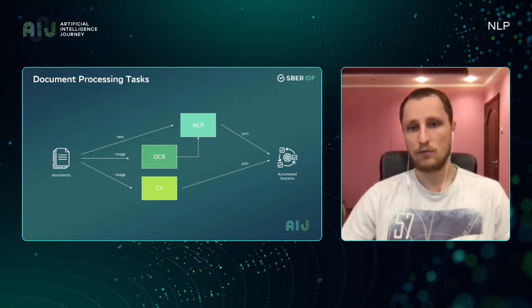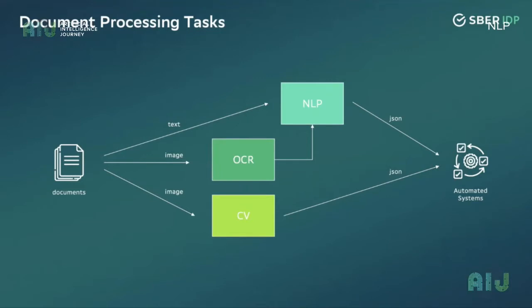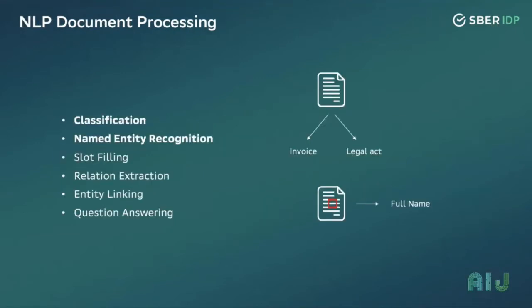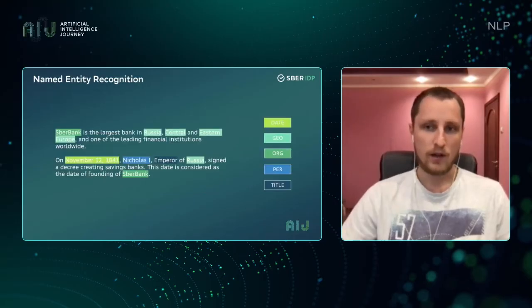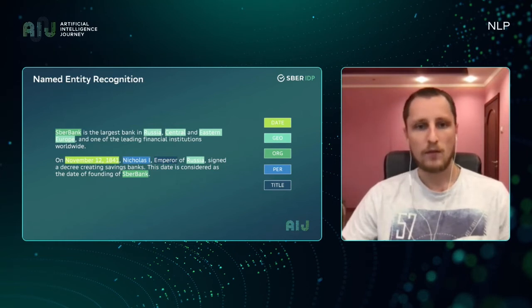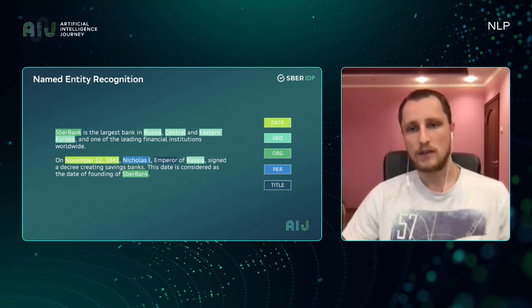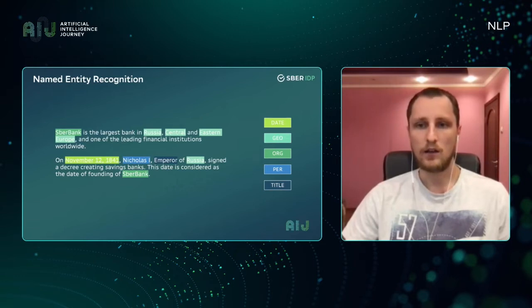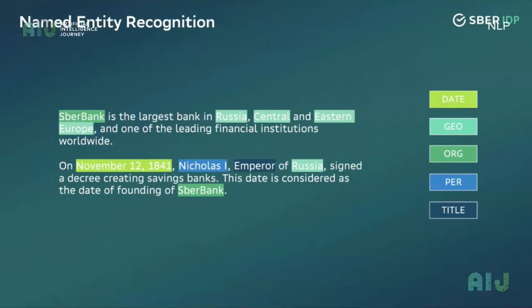Processing documents in Sber goes through two main models: NLP and OCR, plus recognition that allows us to process data, which then goes to further NLP processing. The main tasks we are working on are mostly classification tasks and retrieval of named entities. Named entity recognition means retrieving parts of text related to specific categories: dates, geolocation, persons, money, and so on.